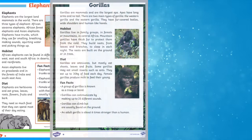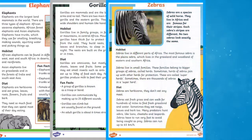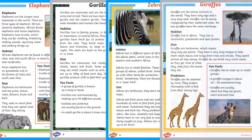Teach your Key Stage 1 children about a variety of animals with these informative fact files. With three different levels of reading challenges, these fact files will teach your Key Stage 1 child all about the habitat and diet of these animals, as well as other fascinating facts.